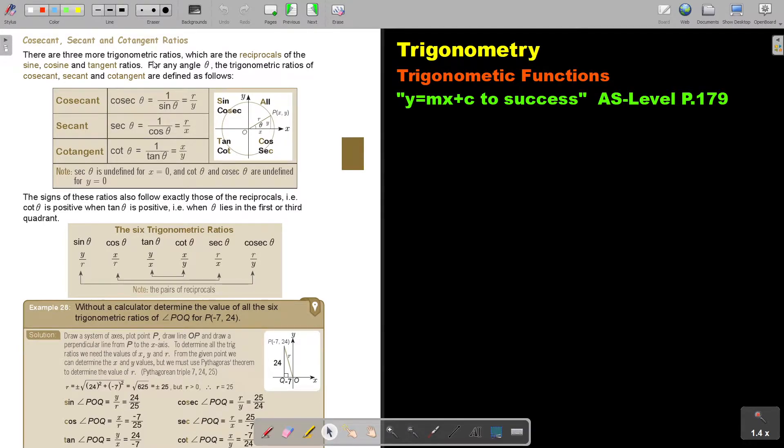There are three more trigonometric ratios, which are the reciprocals of the sine, cosine, and tangent ratios. For any angle theta, the trigonometric ratios of the cosecant, secant, and cotangent are defined as follows. Cosecant, or cosec, theta is one over sin. That's why it's the reciprocal. Where sin would have been opposite over hypotenuse, now it's hypotenuse over opposite. It's the reverse.